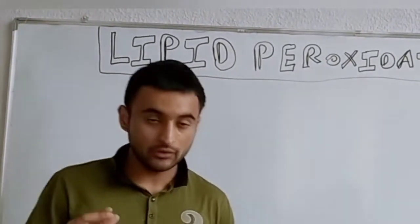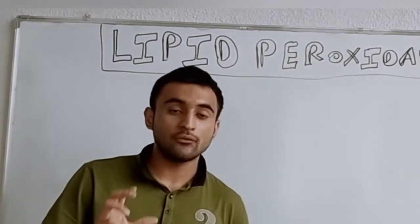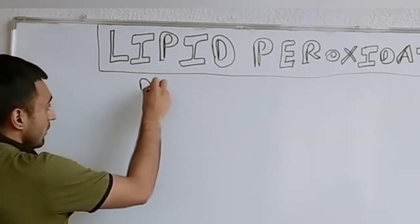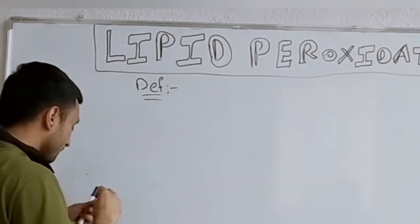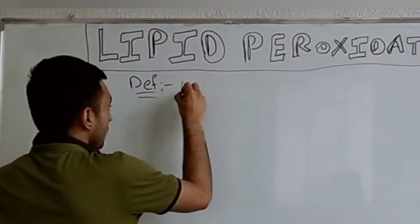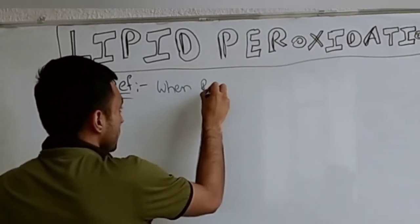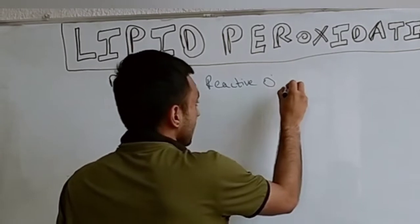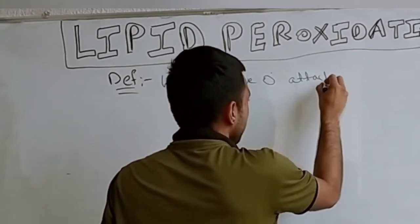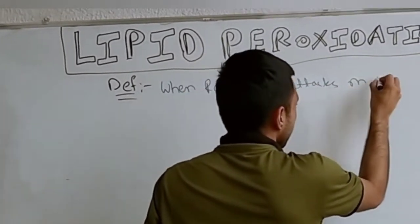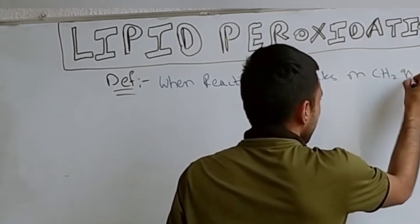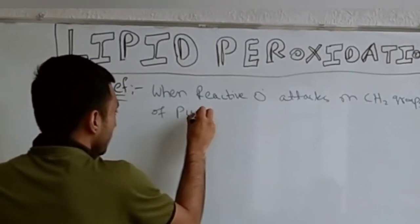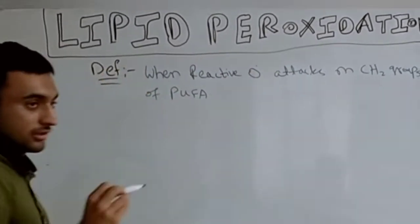Lipid peroxidation occurs when reactive oxygen free radicals react with the polyunsaturated fatty acids. Specifically, when a reactive oxygen free radical attacks the CH2 groups of polyunsaturated fatty acids, lipid peroxidation occurs.